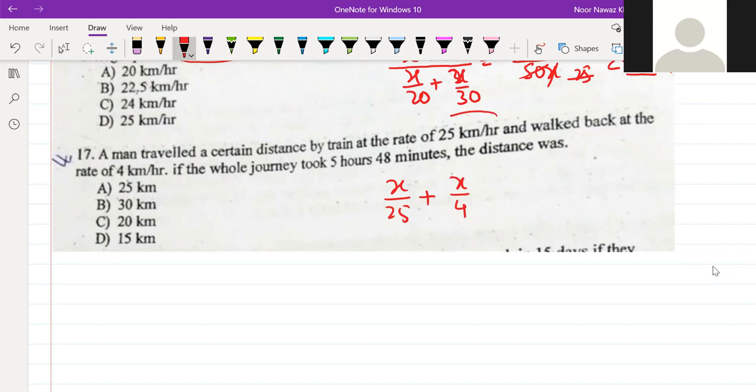So x by 25 plus x by 4 equals the total time. The total time is 5 hours 40 minutes. If we change 40 minutes to hours, that's 40 divided by 60.